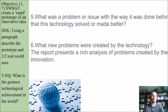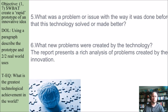Question five: What was a problem or issue with the way it was done before that this technology solved or made better? For example, people don't have a lot of time to walk around the block over and over, so time might have been a problem. Question six: What new problems were created by the technology? The report should present a rich analysis of problems created by the innovation — analyze what new problems could possibly come from this technology.